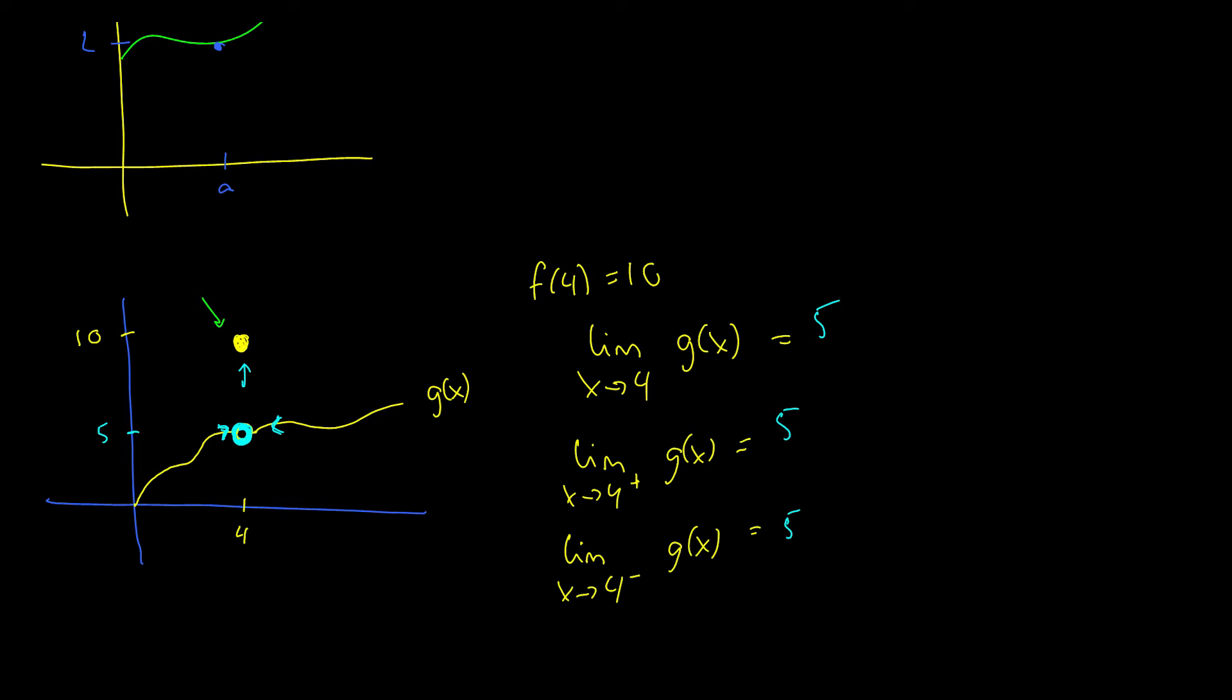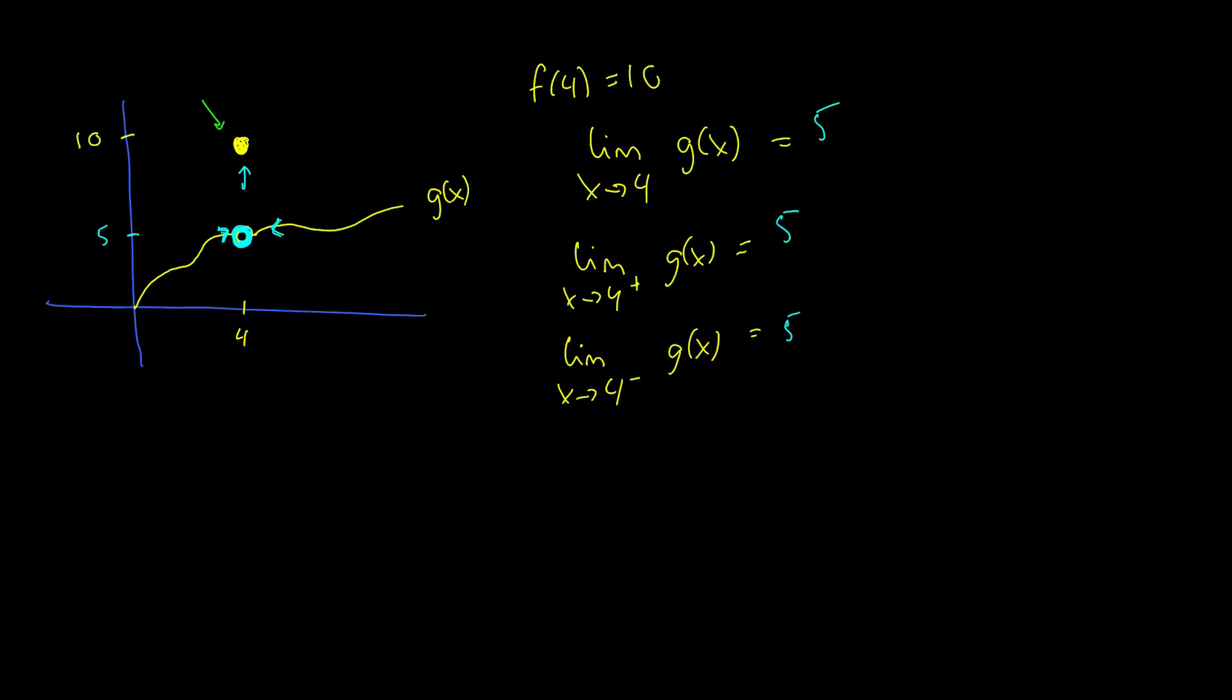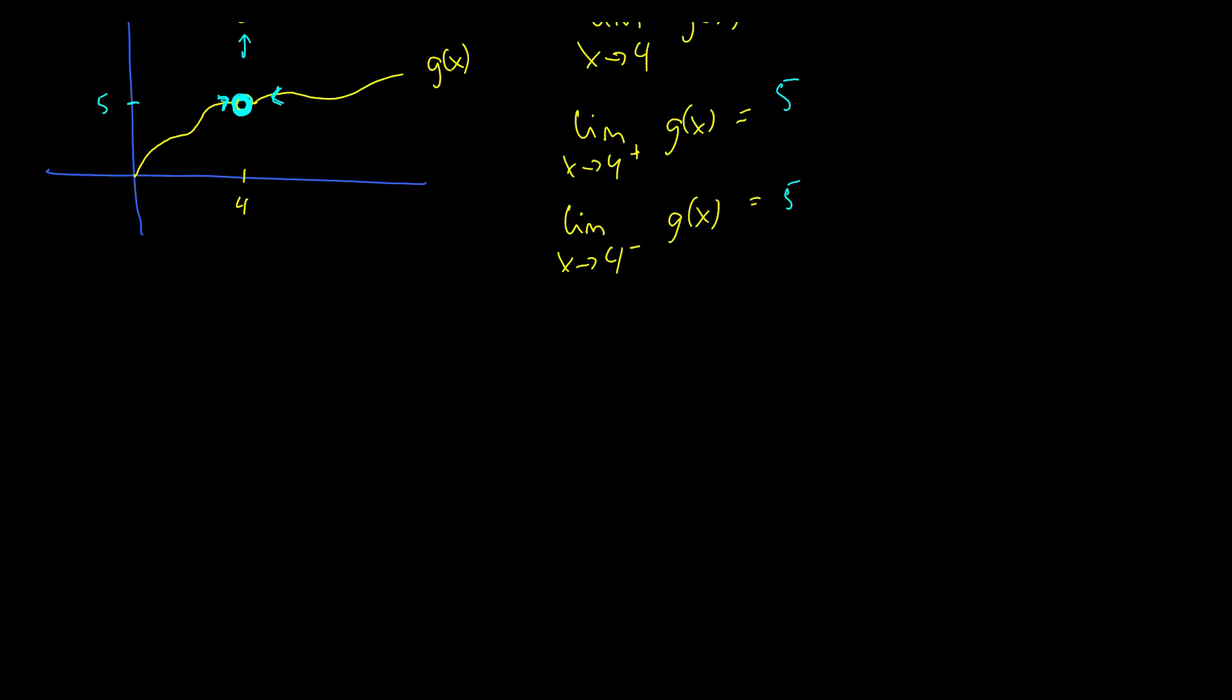So we're going to try another example here. What about a scenario where we have a graph that looks like, hmm, there's a gap here, and then it's defined here, and it continues on, and we're going to call this function h of x. All right, so let's pick a point. This is the point five, this is three, and this is nine.